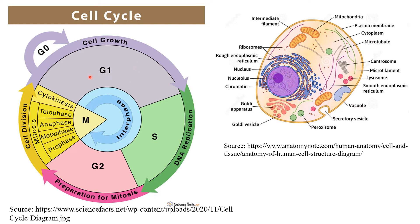Gap 1 is also associated with G0 phase. G0 phase is a quiescent phase where some cells do not continue to grow or divide further. For example, neurons in a human cell do not divide further. These non-dividing cells, like neurons and cardiac cells, remain in G0 phase and do not re-enter the cell cycle.